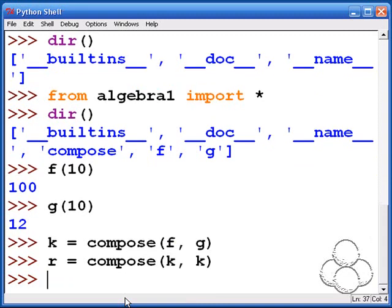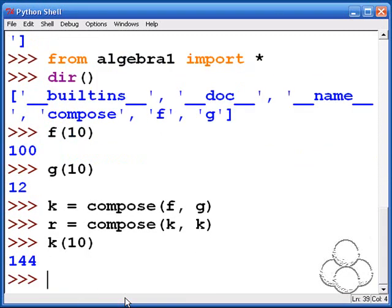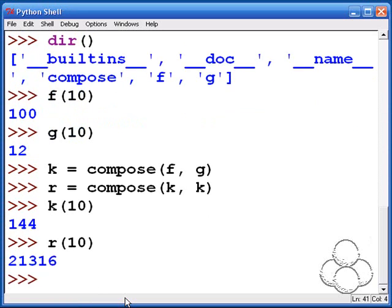Here we're going through the paces on that. f raises the number to the second power, g adds two to a number, and so in composing f and g to get k, we add two to a number then we square it. It's kind of a right to left regime.